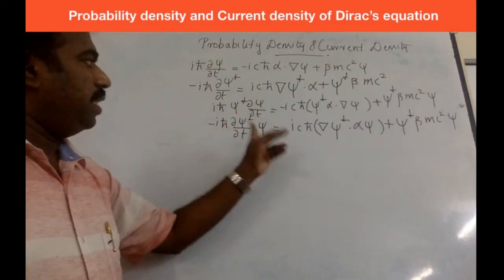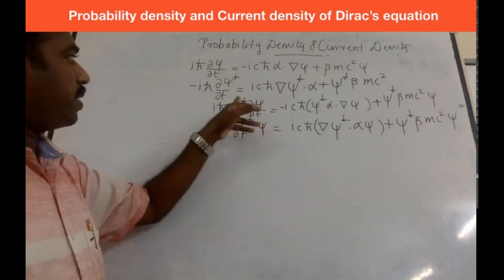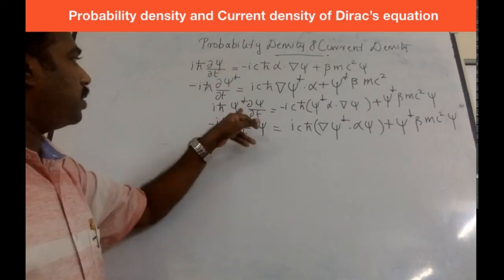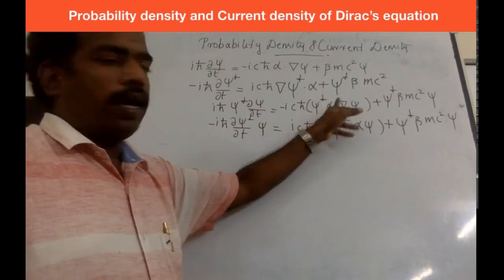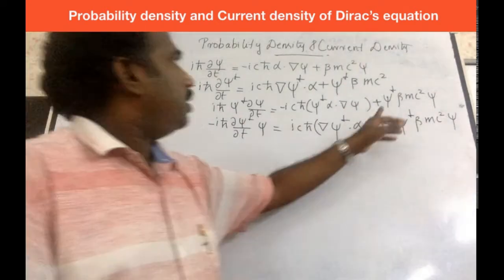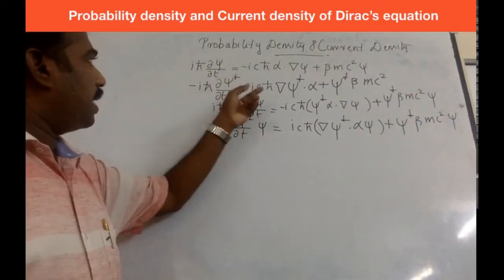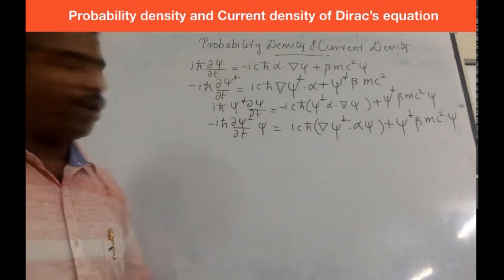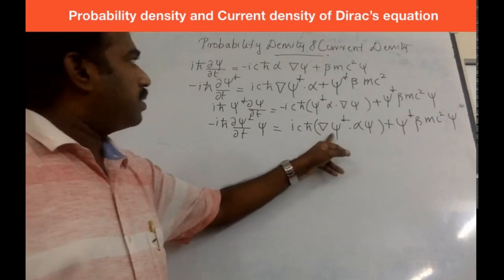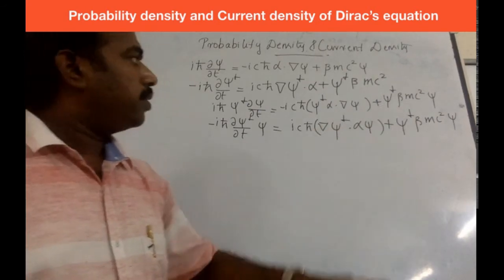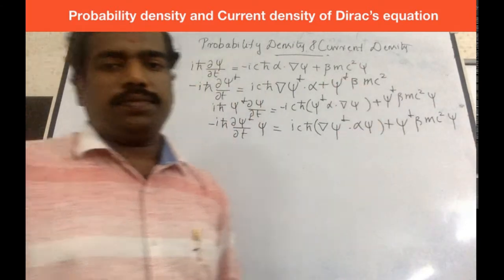So E will be real. The first equation gives: psi-dagger (d psi / dt), then psi-dagger alpha dot del psi, then psi-dagger beta mc-squared psi. The second equation gives: (d psi-dagger / dt) psi, then del psi-dagger dot alpha psi, then psi-dagger beta mc-squared psi.